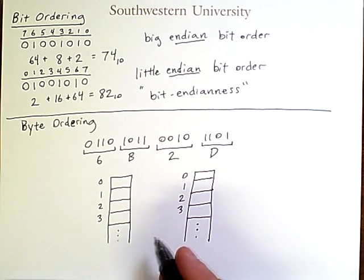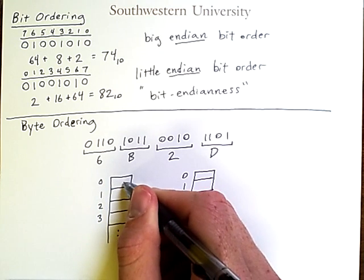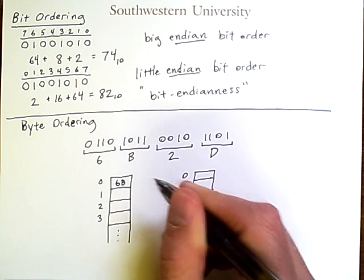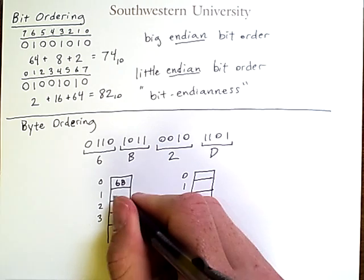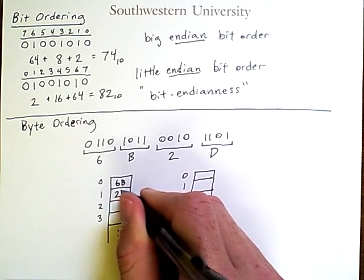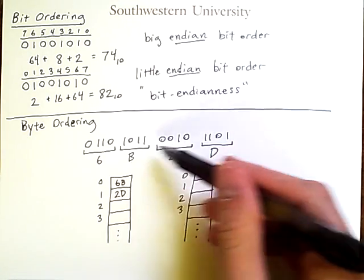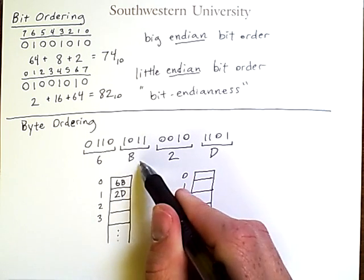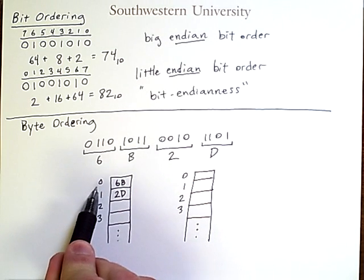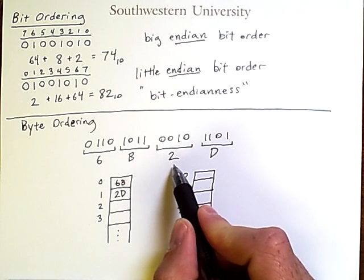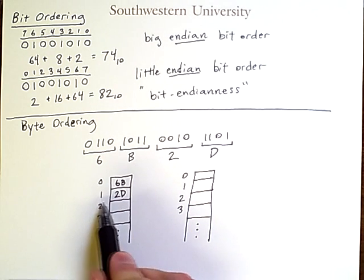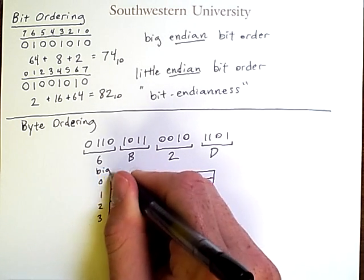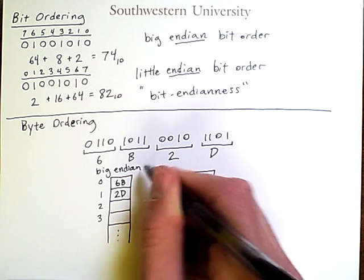And one option is to take one byte, this one here, 6B, and put it in position 0 like this. So I am storing this 16-bit number at position 0, and I take the higher order bits and put them in the lower number memory address, and I put the lower order bits in the higher number memory address. This is known as big endian byte ordering.